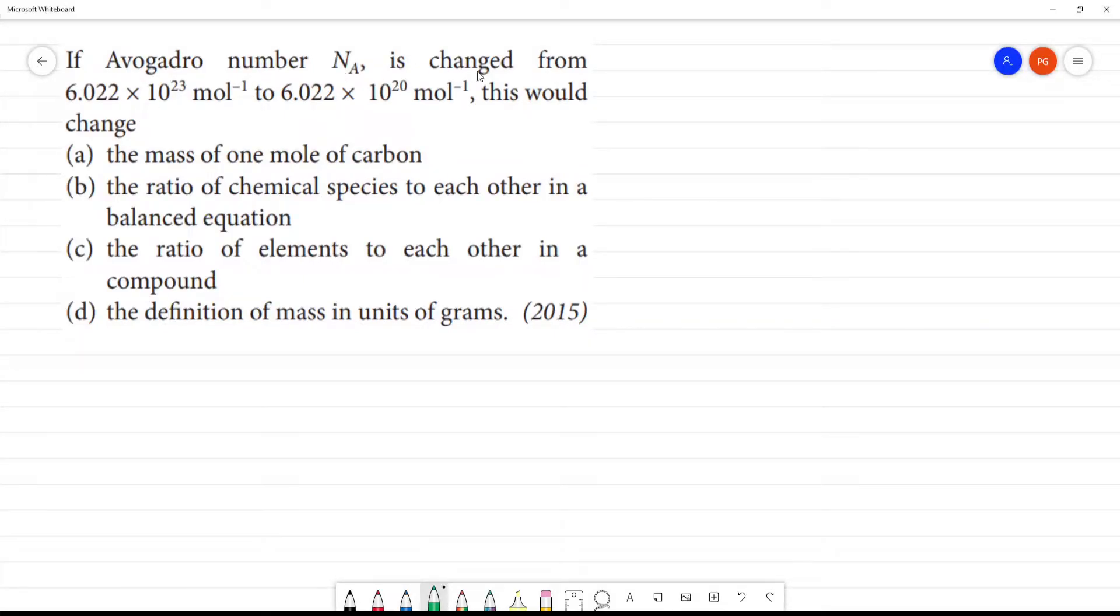If Avogadro number Na is changed from 6.022×10^23 mol^-1 to 6.022×10^20 mol^-1, this would change what we will see.